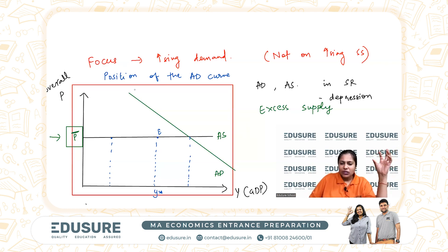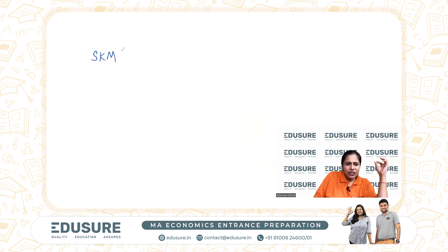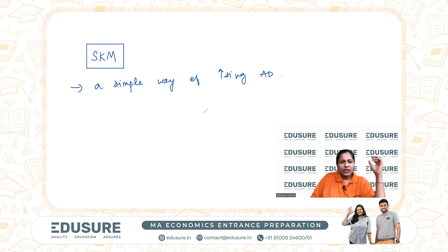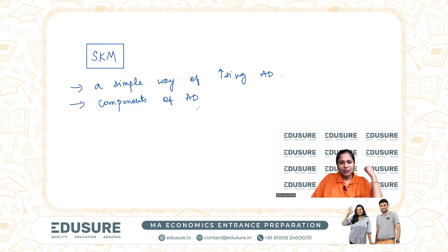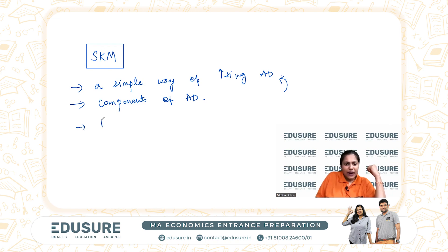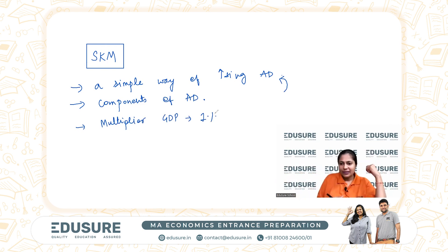So his theory applies to the short run, where prices are fixed and the supply curve is horizontal. In the Simple Keynesian Model, we learn a simple way of increasing aggregate demand — what are its components, how do we measure it, and how do we increase it? Then there's the concept of the multiplier: if I want to increase my GDP by, say, 1%, how much do I need to increase demand by? The relationship between demand and GDP comes through the multiplier.